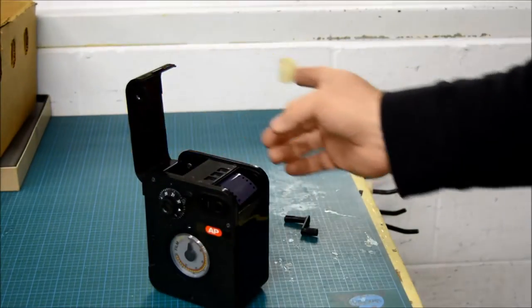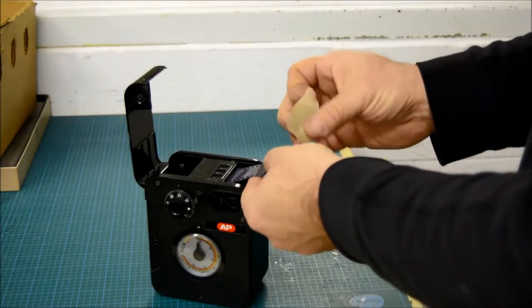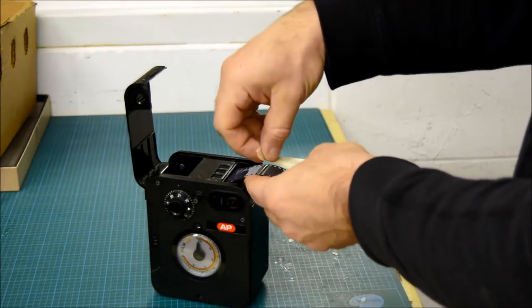Then on the bulk loader, you have your film. You pull out a piece of film. You attach the tape to the film.